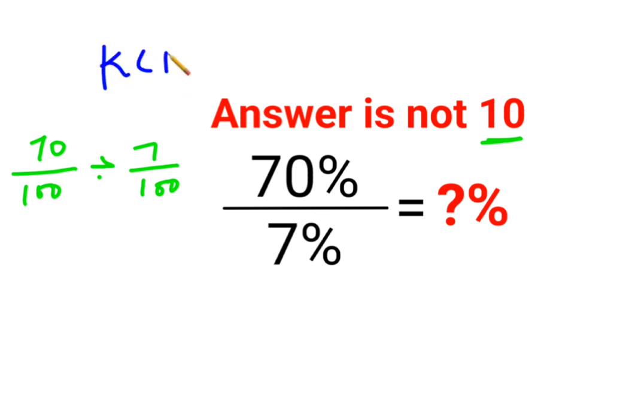Where K stands for keeping the first number as it is or first fraction as it is. So 70 upon 100 will be remaining as it is. C stands for changing the division sign to multiplication.